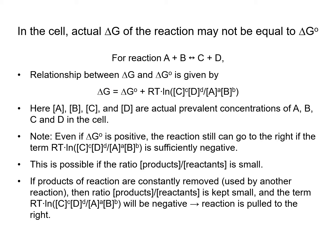As stated here, if products of a reaction are constantly removed — used by another reaction — to keep the concentration of C and D low, then the ratio of products to reactants stays small, keeping this term negative, and the reaction is pulled to the right.